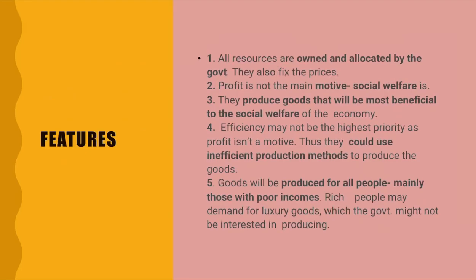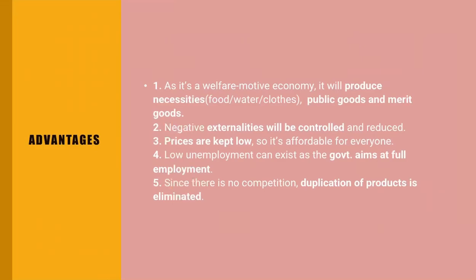In a planned economy, inefficient production methods may be used. Goods are produced for all people, mainly those with poor incomes. Rich people may demand luxury goods which the government may not be interested in producing. Advantages: as it is a welfare-motivated economy, necessities like food, water, clothes, shelter, public goods, and merit goods are produced.